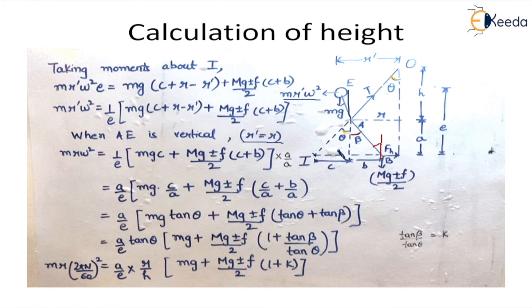Now what we have done? We have taken tan theta common from the whole equation. So from here it comes out common and from here also. So we divide tan theta by tan theta which is a term K.